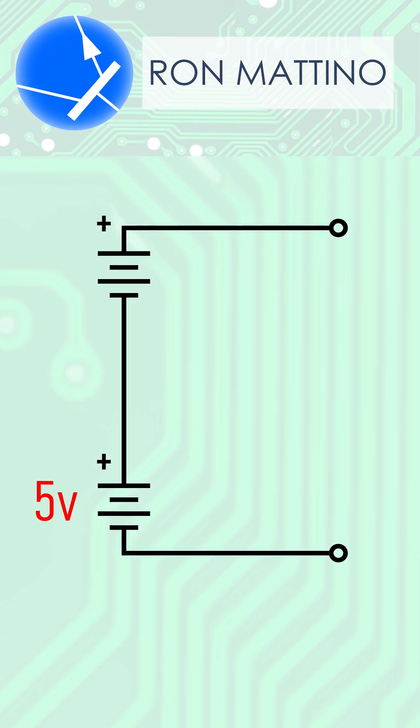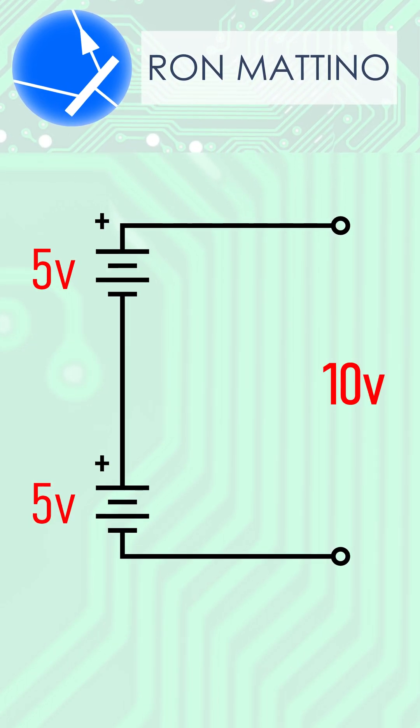As we know, connecting two identical DC sources in series doubles the voltage.